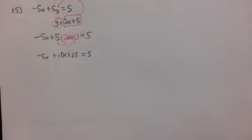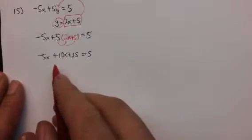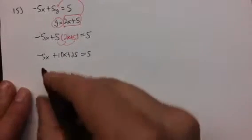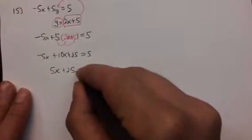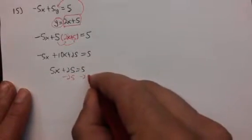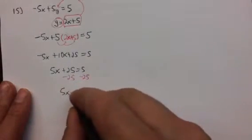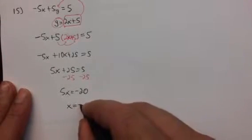And so this is a lot like the earlier problems you've done in your homework, where you're just combining like terms. 5x plus 25 equals 5. Isolating the x by subtracting 25 on both sides. And so we get 5x equals negative 20. Dividing by 5 gives us that x equals negative 4.